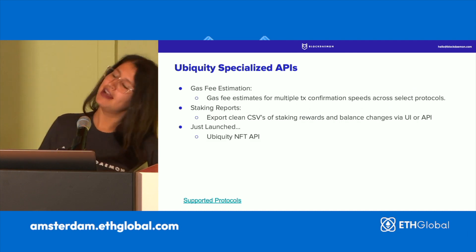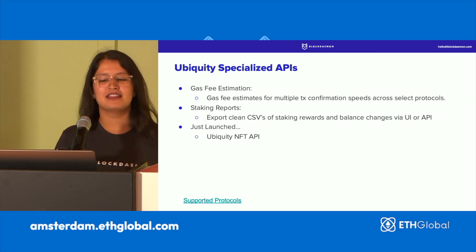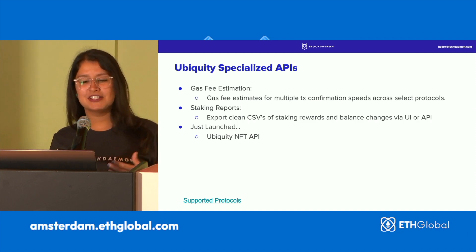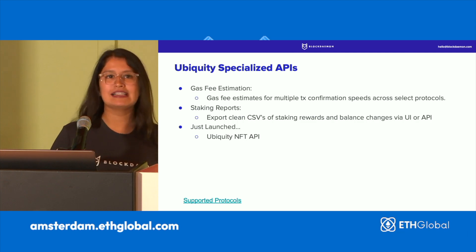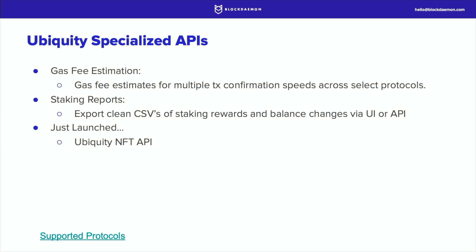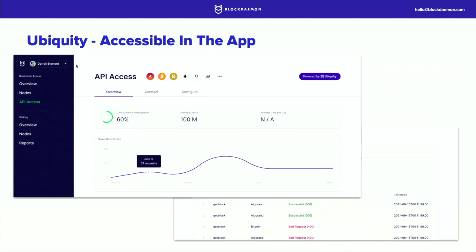We also have specialized APIs for Ubiquity. Some things I've used recently are gas fee estimation and staking reports that export to a clean, easy-to-read CSV for analytics. And we just launched our NFT API. This is what your single pane of glass looks like when accessing Ubiquity — your user account, overview, the nodes you have access to, your API access. You can see the different protocols, metrics, and whether transactions or data requests ran successfully or returned a bad request.